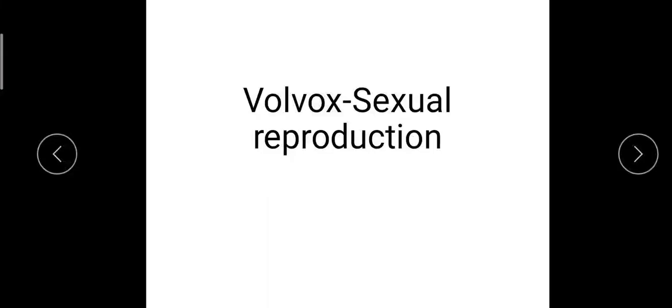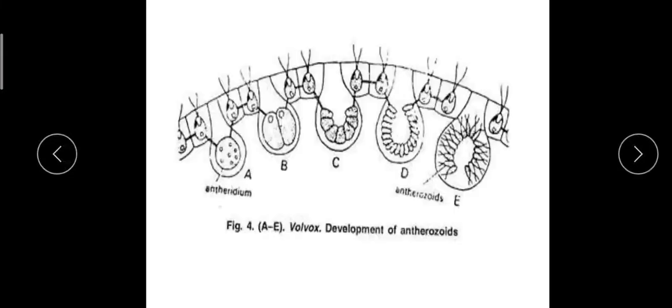In the Volvox colony, certain cells located at the posterior part of the colony develop into antheridia. The cells which are destined to form antheridia withdraw their flagella. The cell gets rounded off and its protoplasm rounds off to form a spherical body. It also enlarges in size, as you can see when compared to the other cells.